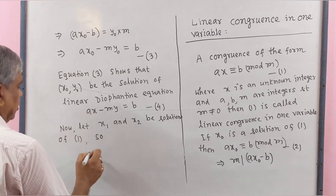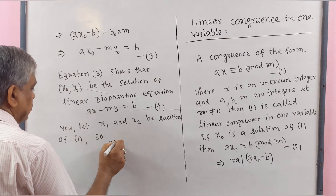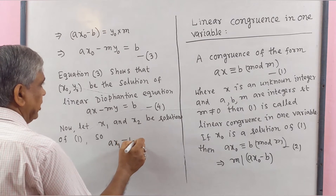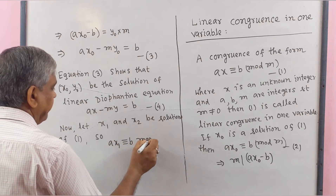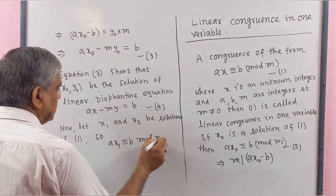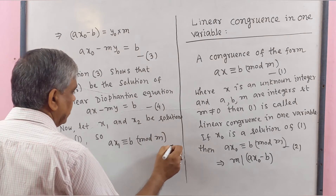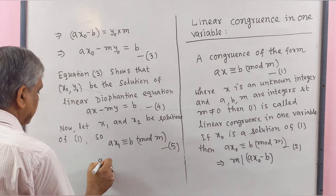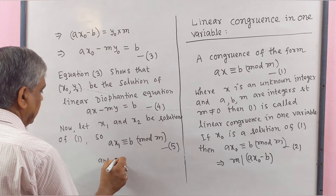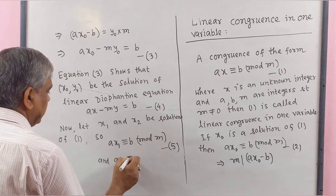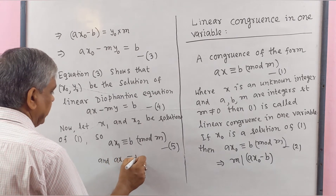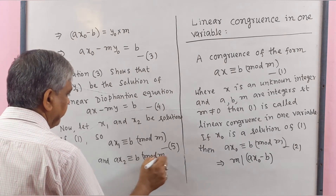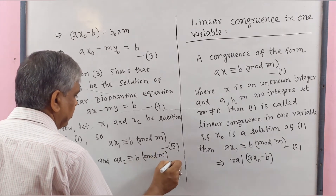Let X₁ and X₂ be two solutions of equation 1. So AX₁ ≡ B (mod M), and AX₂ ≡ B (mod M).